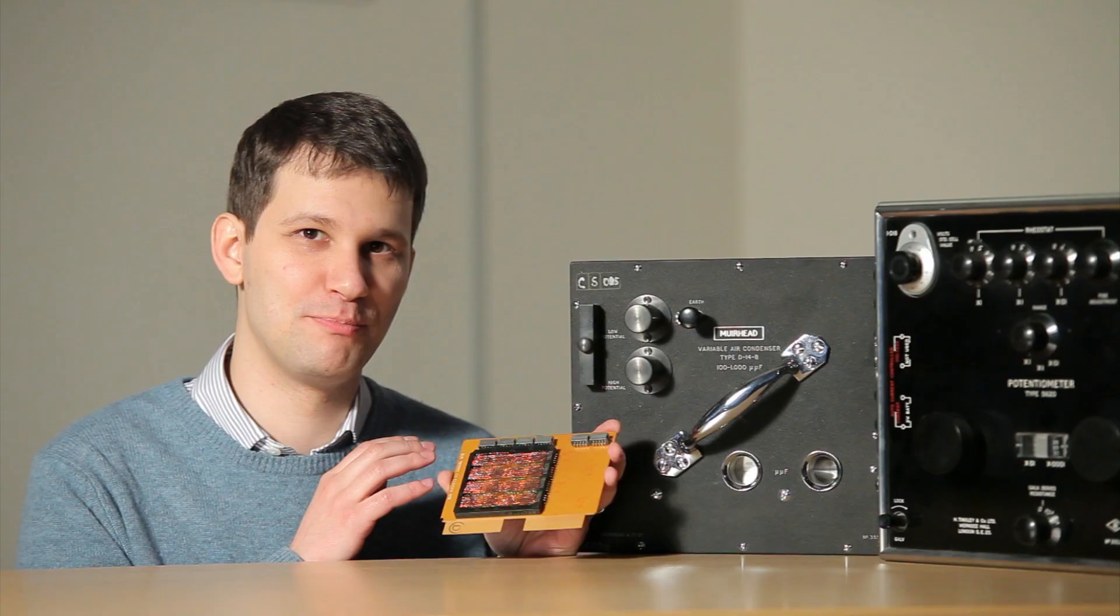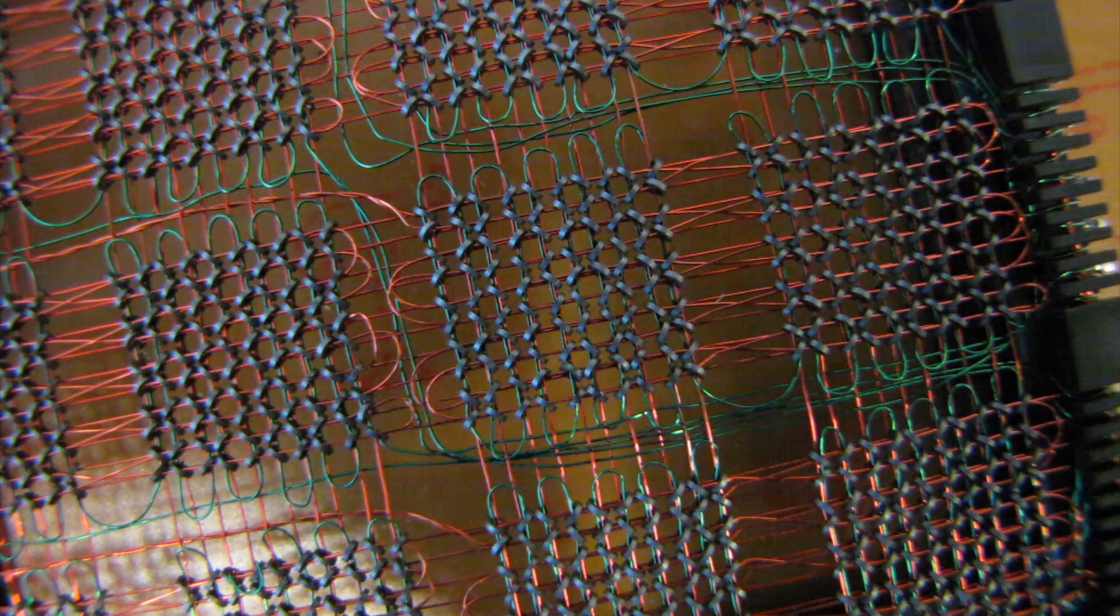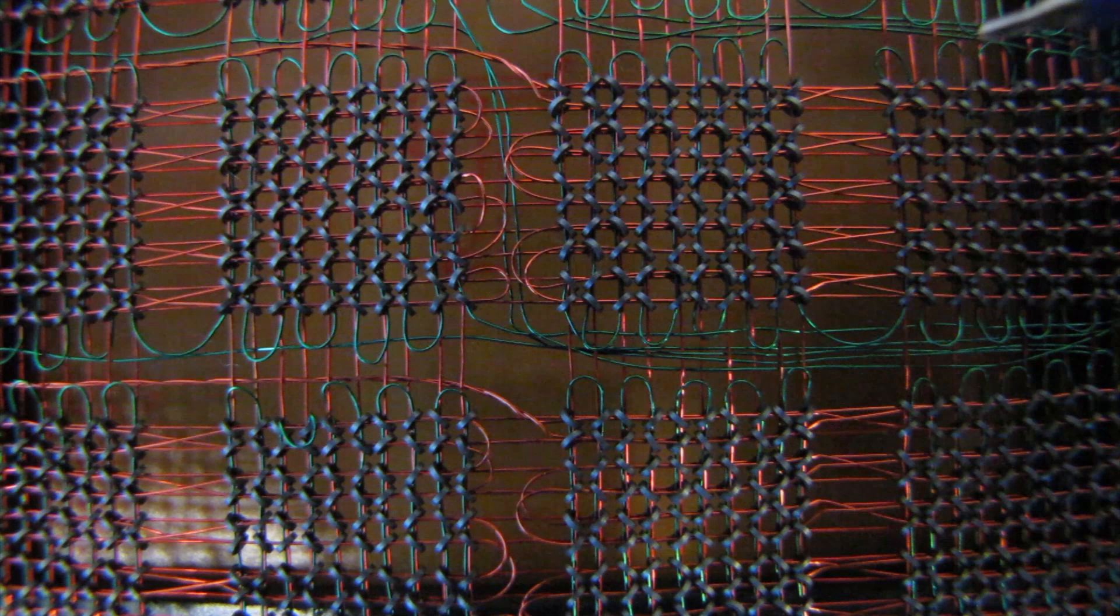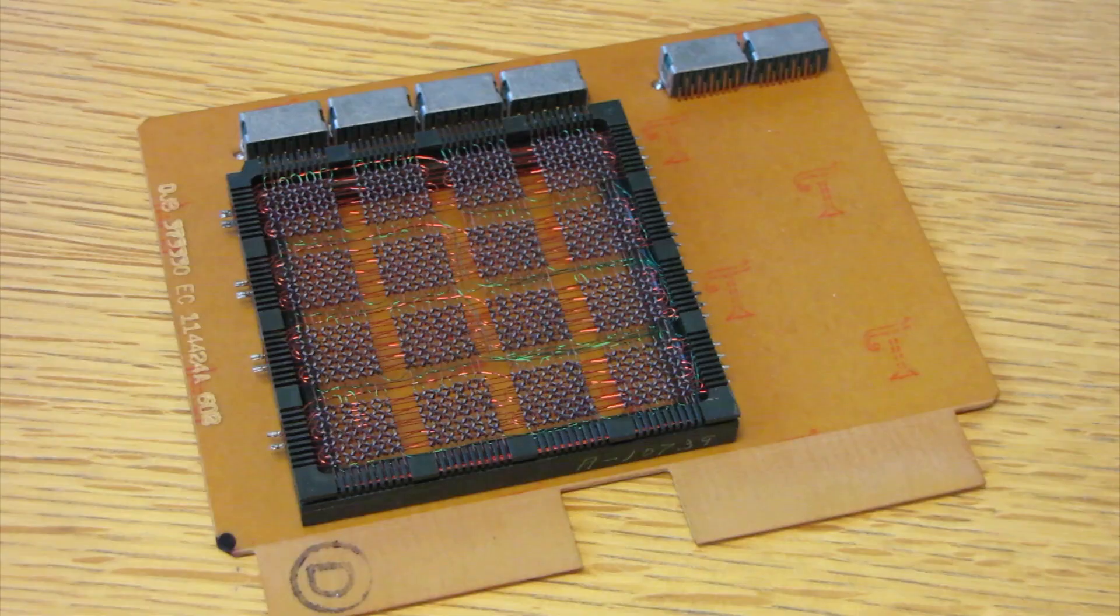But its shortcomings became apparent when larger size arrays were attempted. There was a limit to how small the components could get before the technicians would simply fail to manipulate them. So even by using the thinnest threads and the tiniest cores, high capacity modules would be impractically large and exceedingly expensive.